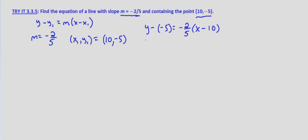Now we'll simplify. On the left-hand side, minus a negative becomes plus a positive. So y plus 5 equals, now we distribute the negative two-fifths. Negative two-fifths times x is negative two-fifths x. Negative two-fifths times 10, that's a negative times a negative, is going to be a positive.